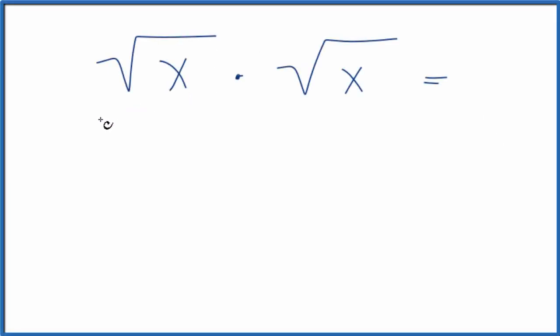Let's take a look at how we can multiply the square root of x times the square root of x. We're going to look at three different ways to do it. The first way I like to do it is